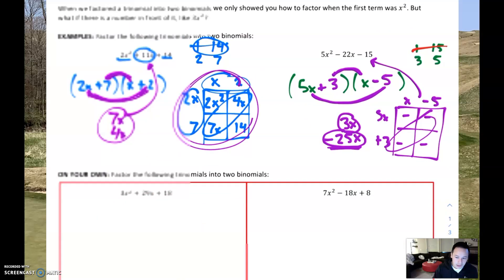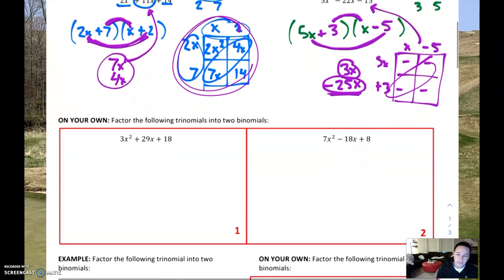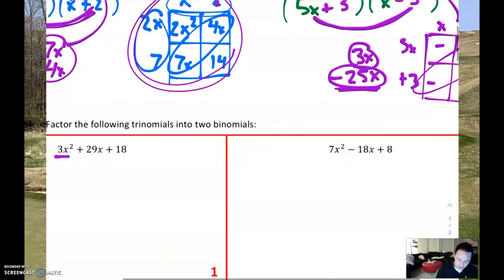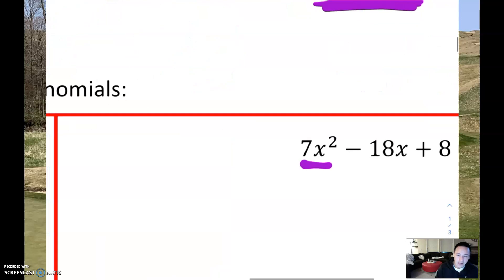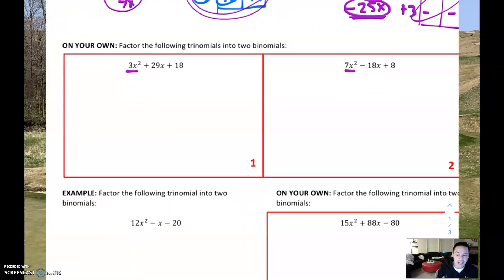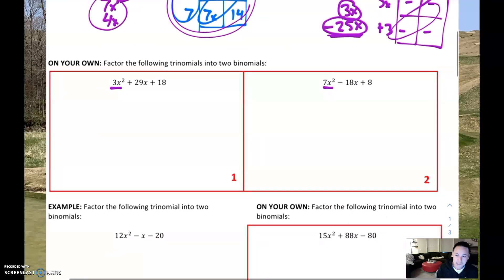Go ahead and try the next two on your own. These two are going to be a little bit simpler just because those first numbers are prime — the 3 is prime and the 7 is prime. After this we're going to go to one where that is not prime anymore. So make sure you have a good grasp on these next two, and then come on back for the last example.